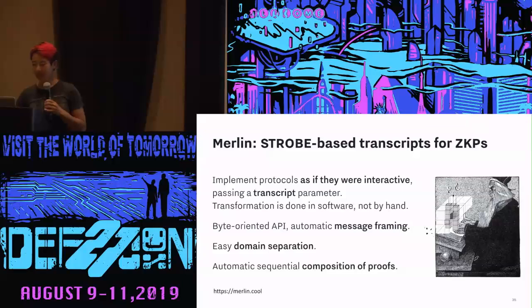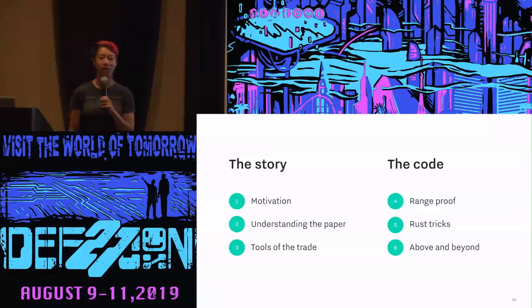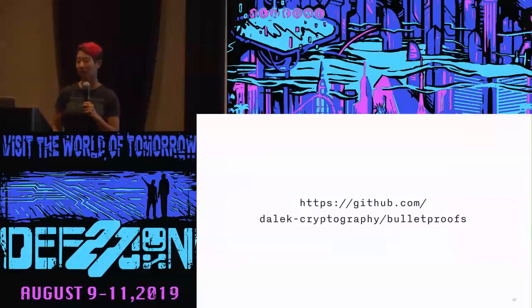Now we've learned about the story — how we decided to implement a zero-knowledge proof, why we chose Bulletproofs, and what tools we use. You're probably itching to see the actual code, so let's dive into that. If you feel like following along, the GitHub repo is open source at dalek.rs slash bulletproofs.